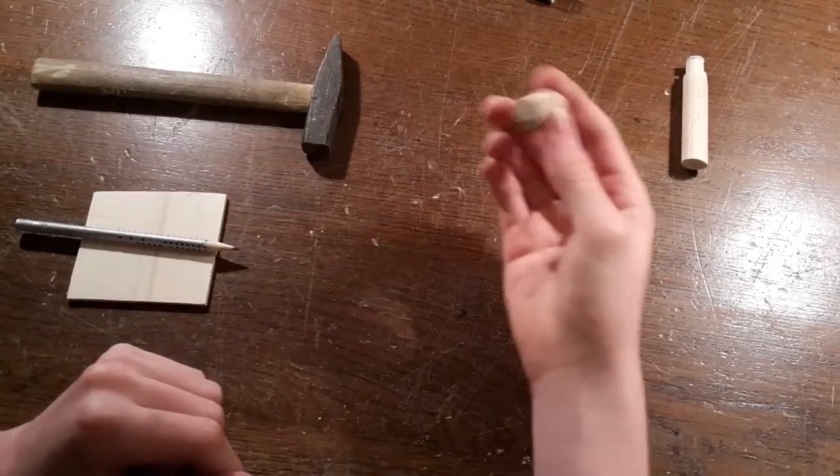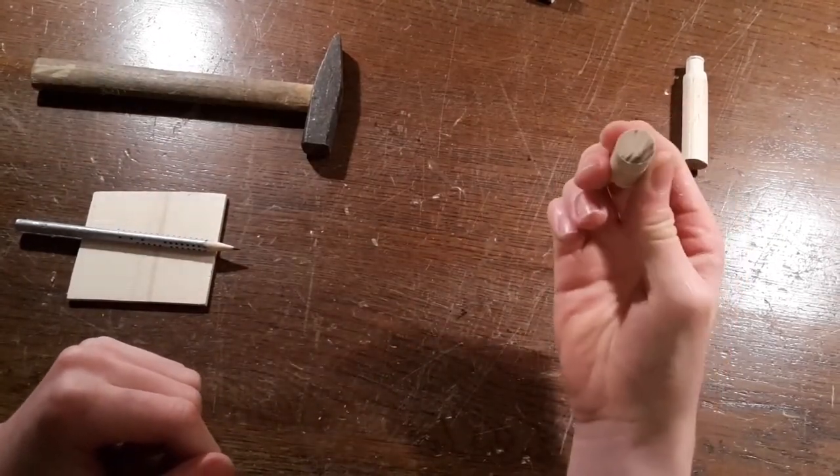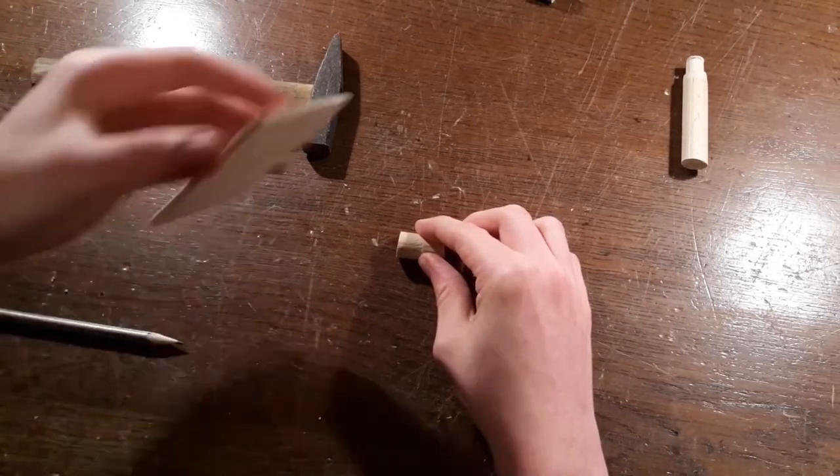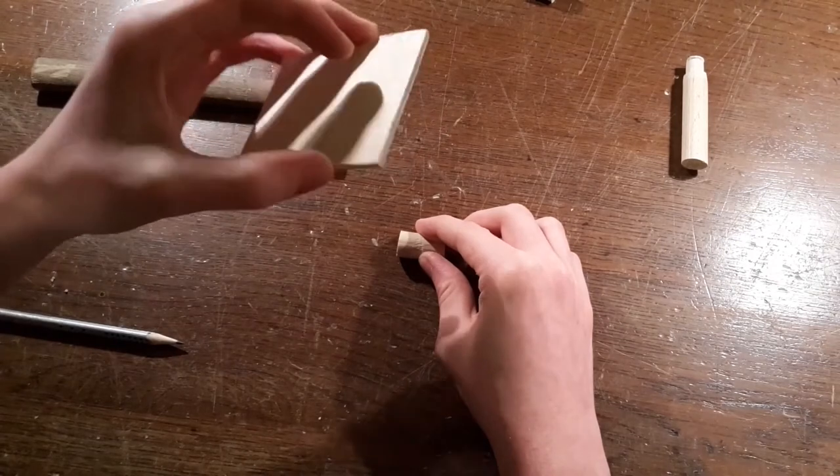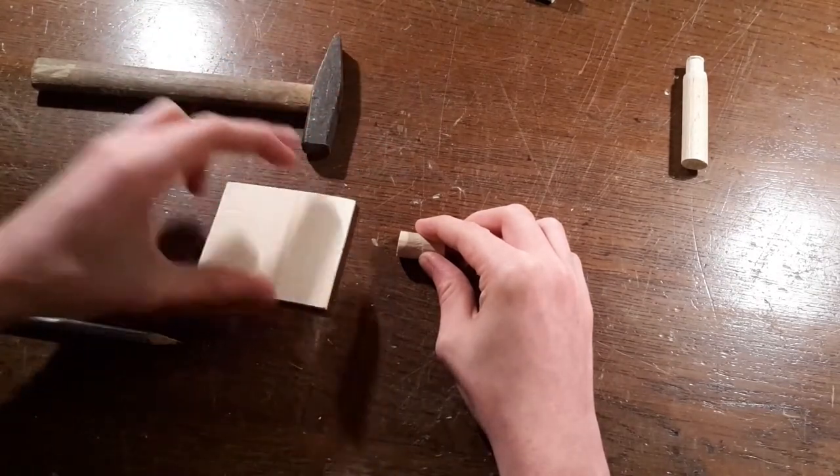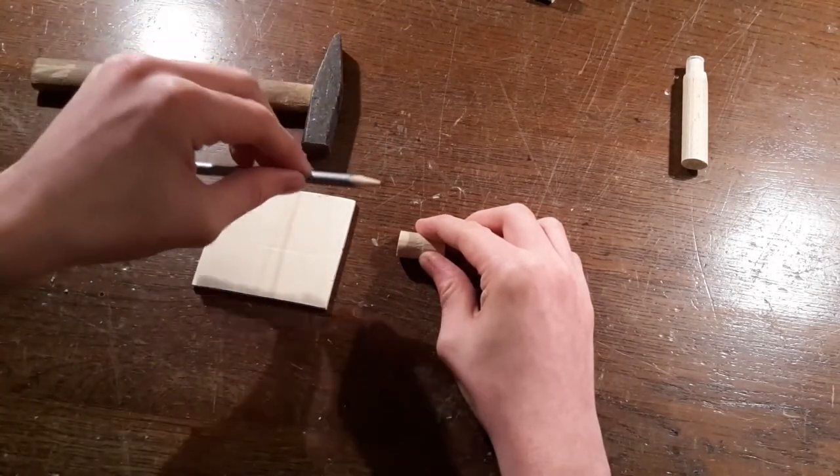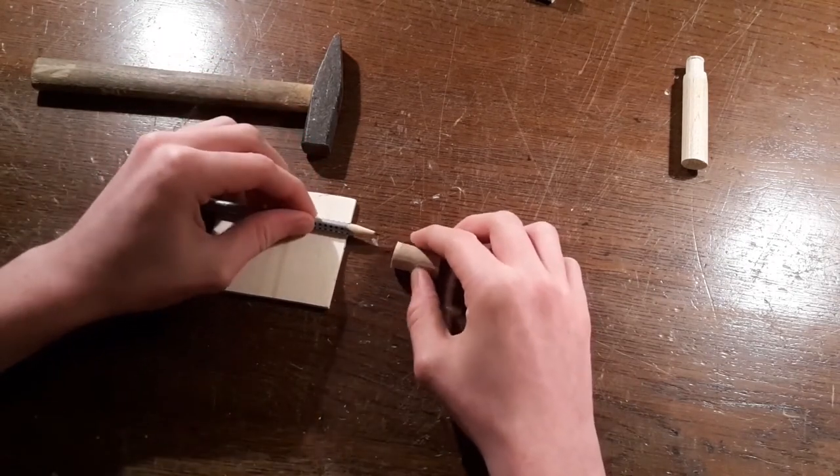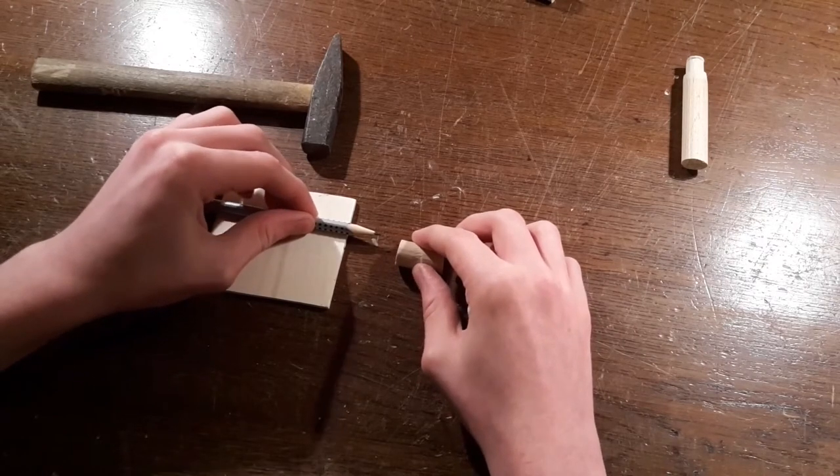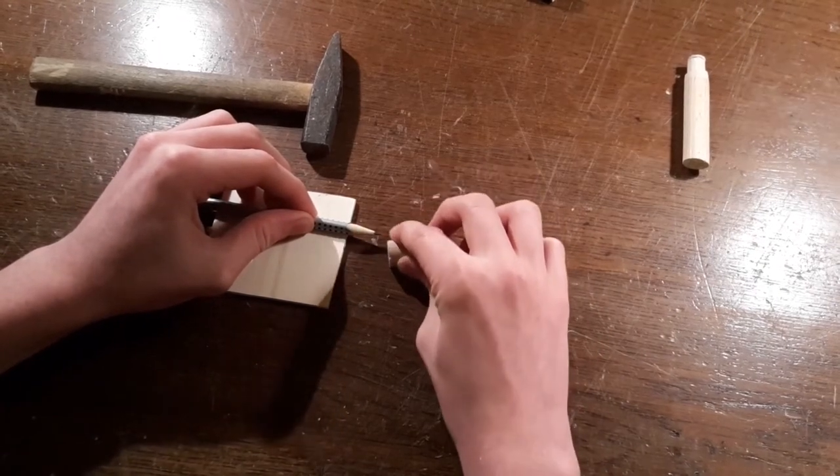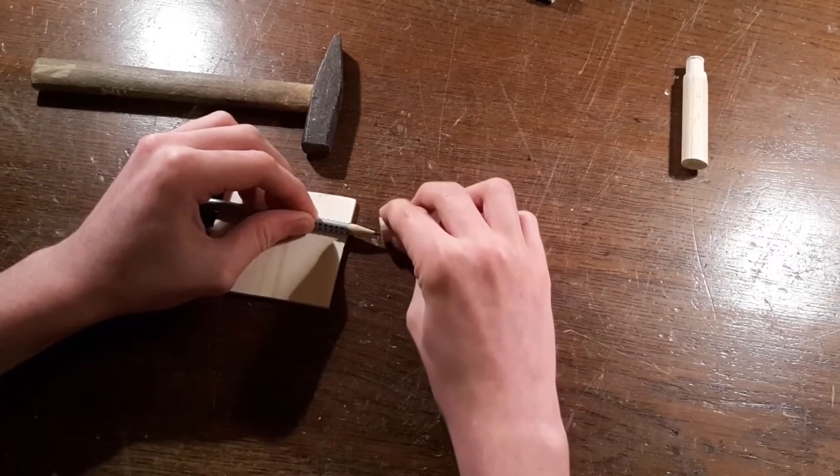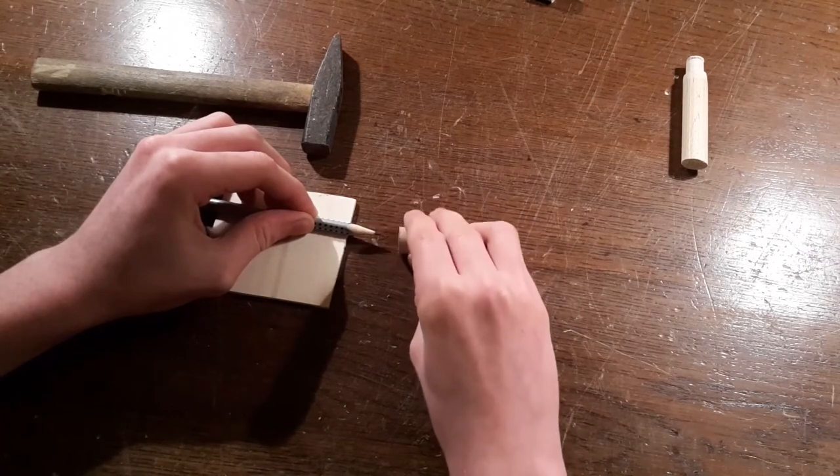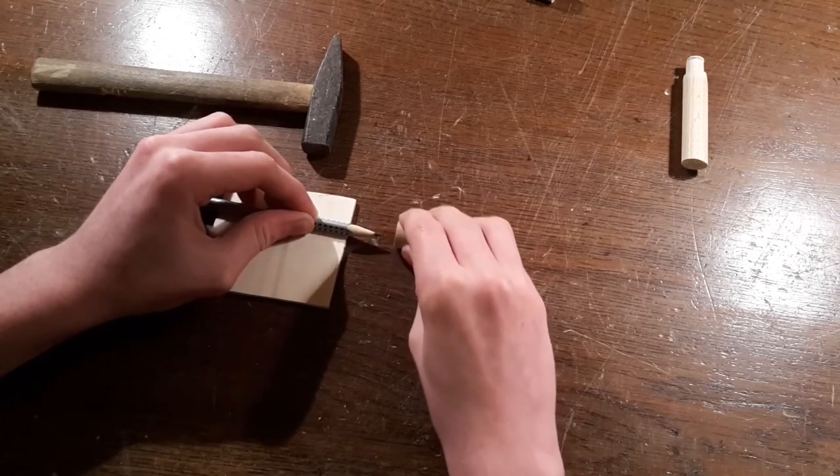So you just take your dowel which you want to drill your hole in, lay it flat onto the ground, then take a very thin piece of wood—mine is 4mm—then take your pencil, lay it also flat onto a piece of wood, hold it down so that it doesn't move, and then just run the piece of dowel over the tip of the pencil and rotate it just a little bit after every pass.